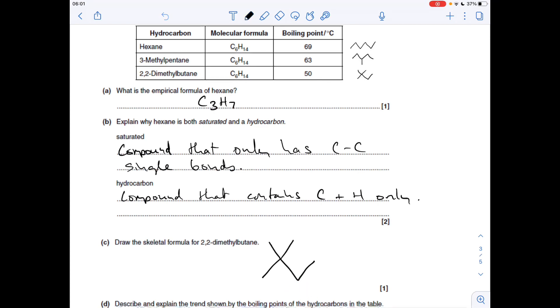Moving on to part D, where I've got to describe and explain the trend shown by the boiling points of the hydrocarbons in the table. In the previous boiling point trend question, it was all down to the number of electrons. Well, it's not here because they've all got the same molecular formula—they're all structural isomers. It's down to the amount of branching.